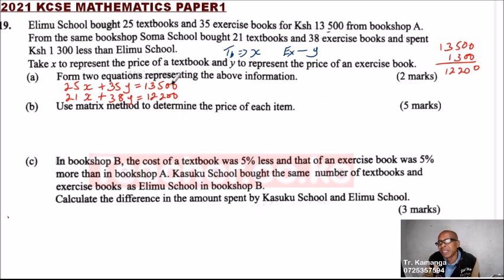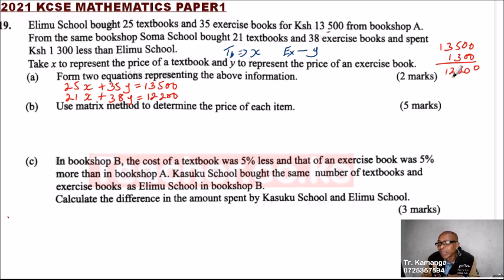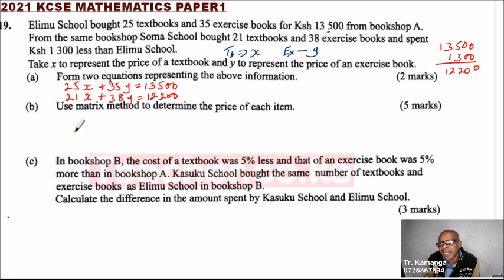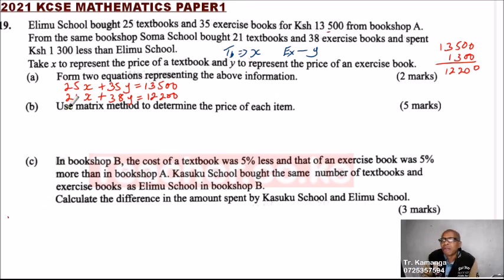You get two marks — one mark for each equation. Don't forget to calculate the amount spent by Erimu. Now look at Part B: use the matrix method to determine the price of each item. In Form 3 you studied matrices, and this is an application of matrices.